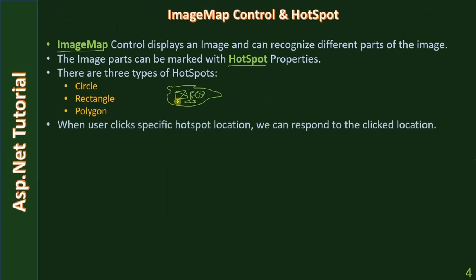When the user clicks a specific hotspot location we can respond to that click. For example, if the user clicked on a specific location in the rectangle, you can know that the user clicked the rectangle part of the image map control and you can respond to that rectangle location click.